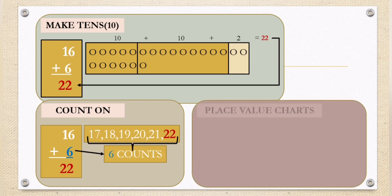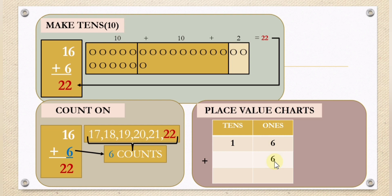Another method: place value charts. 6 plus 16. The 6 in 16 and 6 both belong to the place values of ones, and the 1 here belongs to the place values of tens. So for you to easily solve them, we must align. We will use the place value chart. So 6 plus 6, we will have 12.